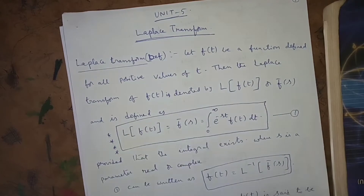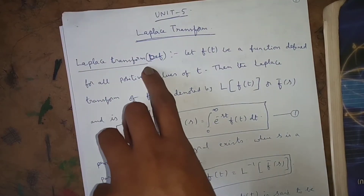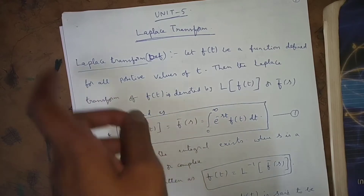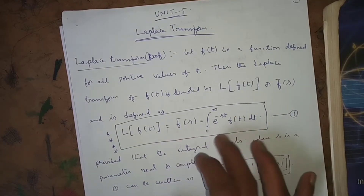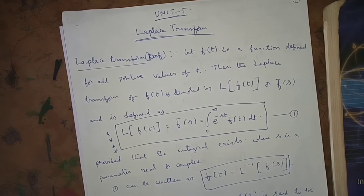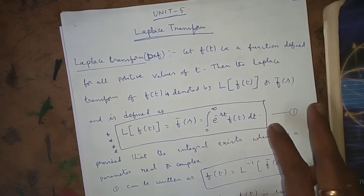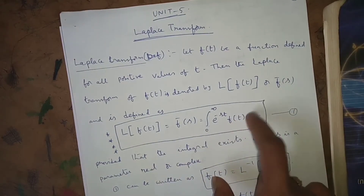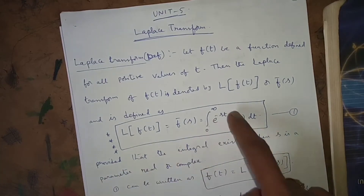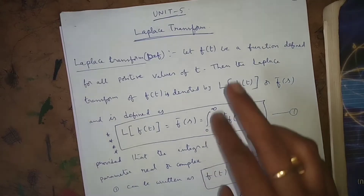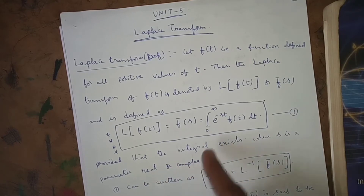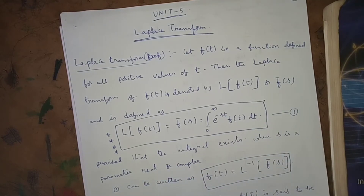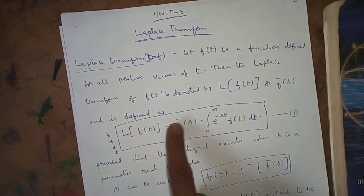Once again: f(t) is a function of t for all positive values. The Laplace transform L{f(t)} = f̄(s) = integral from 0 to infinity of e^(-st) f(t) dt. This is very, very important — we need to use this formula for all Laplace transform problems. This formula is valid provided the integral exists, where s is a parameter, real or complex.